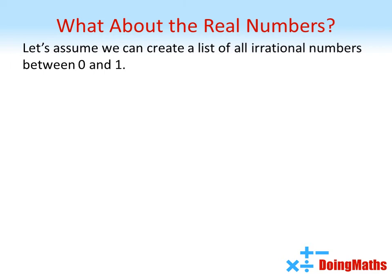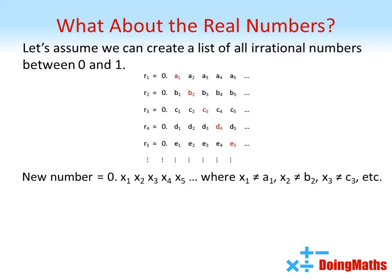We write all the numbers out as such, where a1, a2, etc., represent the digits in each decimal place. We can now create a new number, 0.x1, x2, x3, x4, and so on, where x1 doesn't equal a1, x2 is not equal to b2, x3 is not equal to c3, and so on.